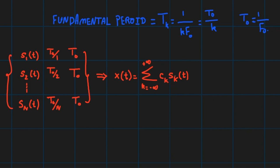So since each and every one of those s_k(t) signals have a common period T₀, then x(t) is also a signal of period T₀.